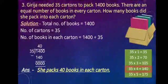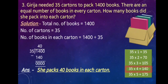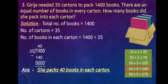Question number 3: Gerija needed 35 cartons to pack 1400 books. There are an equal number of books in every carton. How many books did she pack into each carton? In this question, there are 1400 books in 35 cartons. Find the number of books in each carton such that the number of books in each carton is equal.